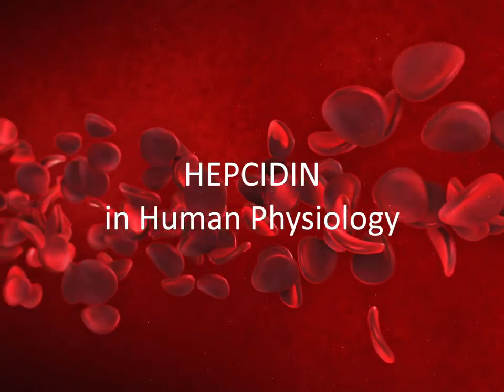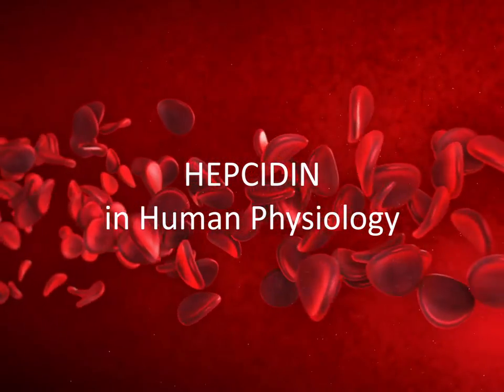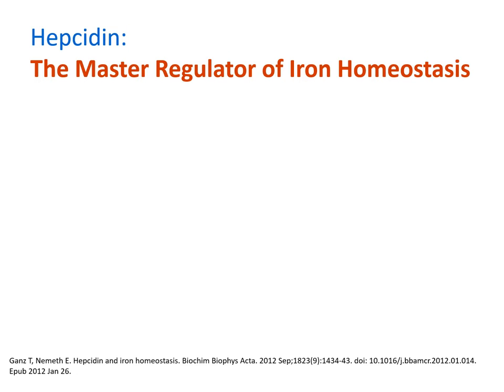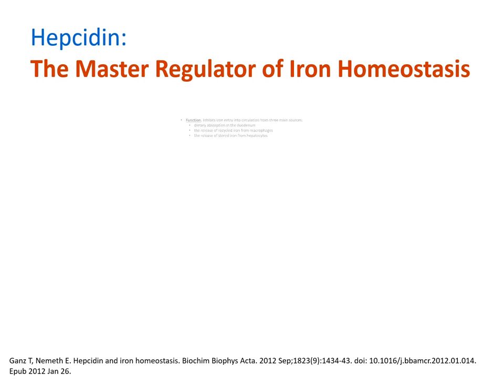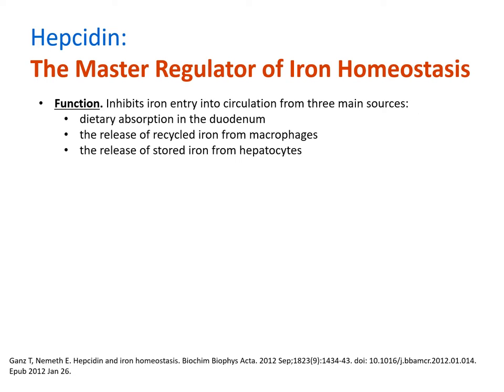What is the role of hepcidin in human physiology? It has long been considered the master regulator of iron homeostasis. Hepcidin functions to inhibit iron from entering circulation by binding ferroportin, the only transporter known to shuttle iron out of storage cells. This action effectively traps dietary iron in the duodenum, recycled iron from senescent red blood cells in macrophages, and the principal site of iron storage, hepatocytes.